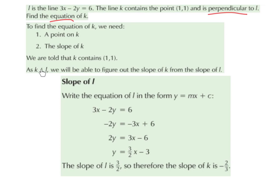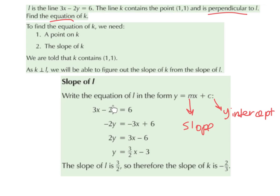This little symbol here means perpendicular. To find the slope of L, we write the equation of L in the form y equals mx plus c, where m represents the slope and c represents the y-intercept. The line L is 3x minus 2y equals 6. We basically want to rearrange it so that we have y as the subject of the formula — we want to solve for y.